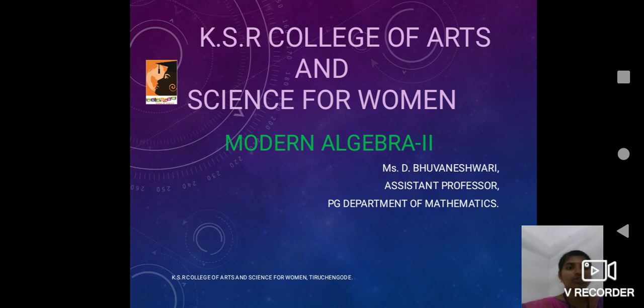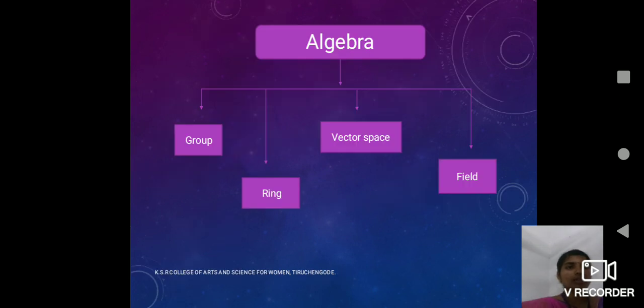In this video, we will discuss some basic concepts of vector spaces and more or less in Modern Algebra 2. In abstract algebra, we will learn about a variety of structures called groups, rings, field, and vector space.